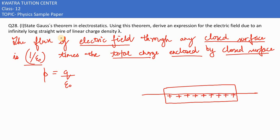We need to find the electric field. We will be finding it at 3 different points. First, let's construct a cylinder around the wire — we make it a complete cylinder and take three points on it.